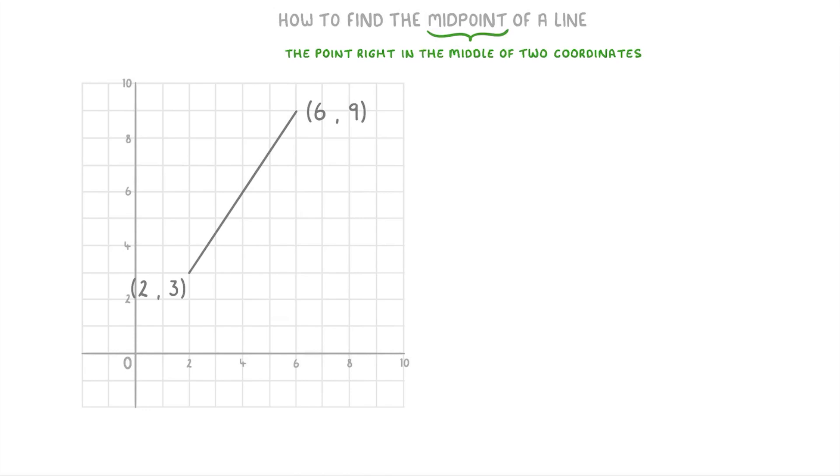So in this example, to find the x-coordinate of the midpoint, we just need to find what's in the middle of 2 and 6, which is 4. And to find the y-coordinate of the midpoint, we just need to find what's in the middle of 3 and 9, which is 6. So the midpoint of this line is (4, 6).